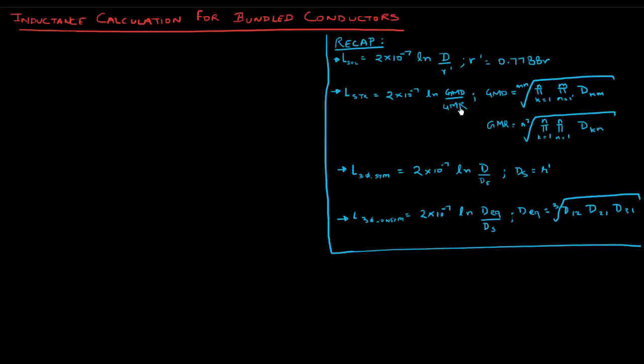And we introduced concepts of GMD and GMR. These were the formulas for GMD and GMR, where GMD was basically a product of all the distances between all the strands in one conductor, let's say conductor x and another conductor y, and GMR was the distance between the strands within the same conductor.